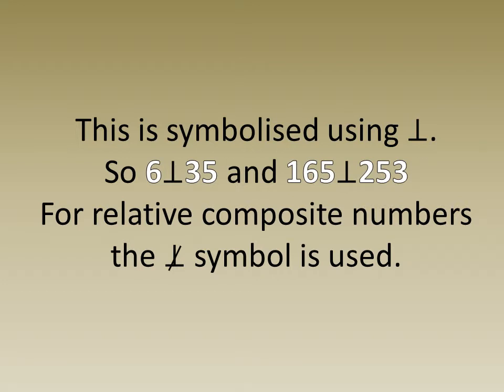This is symbolised using an upside down capital T. So as shown from our examples, 6 and 35 are coprime, and 165 and 253 are relatively composite. For relatively composite numbers, the same symbol is used but with a strikethrough.